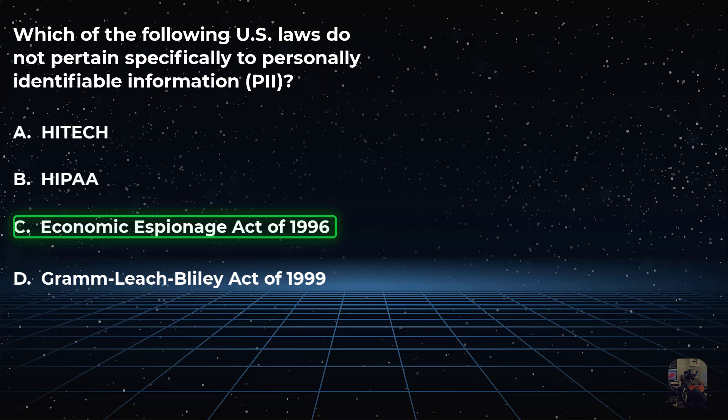To get this question correct, you had to know that choices A, B, and D all dealt with PII, personally identifiable information, while choice C specifically deals with intellectual property.